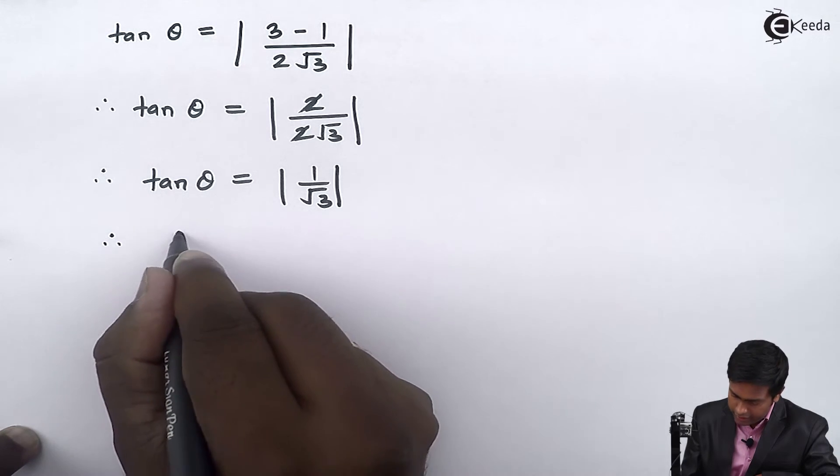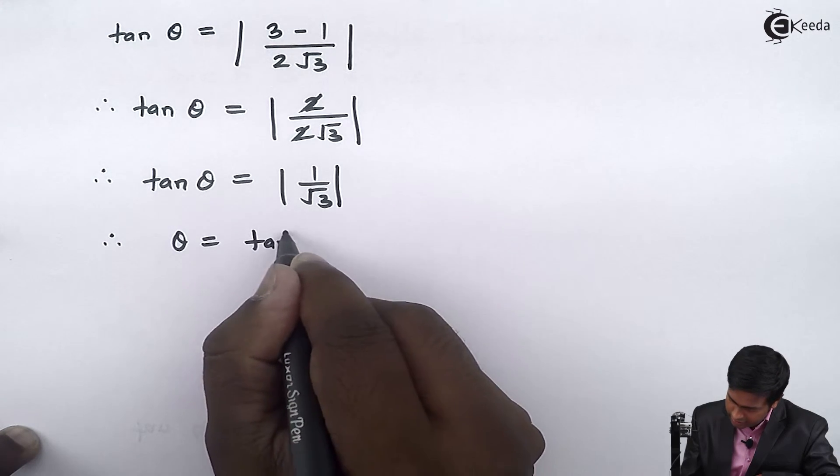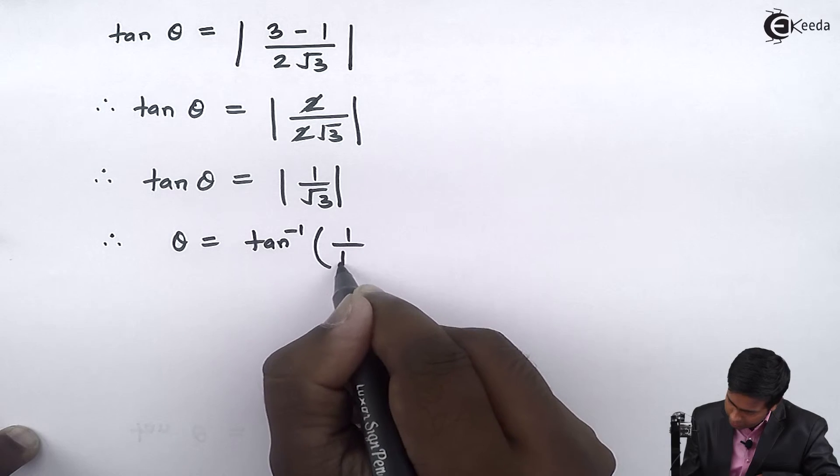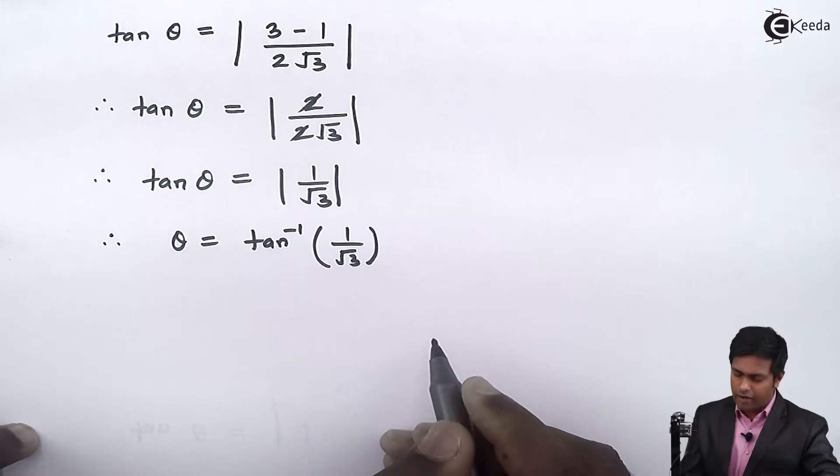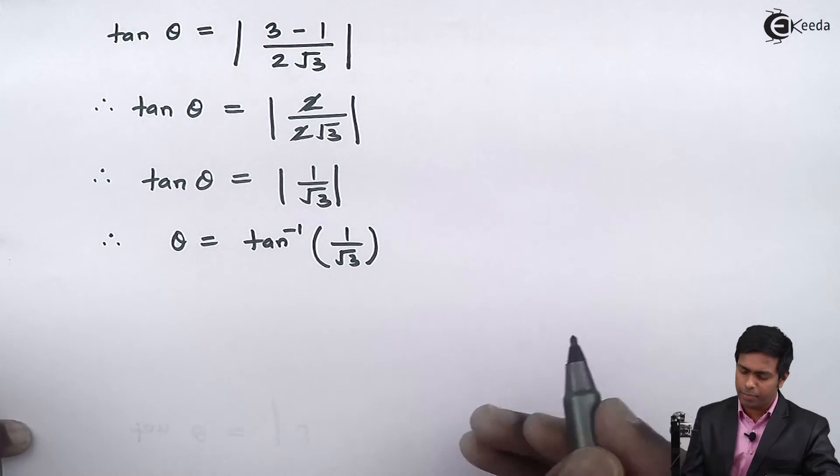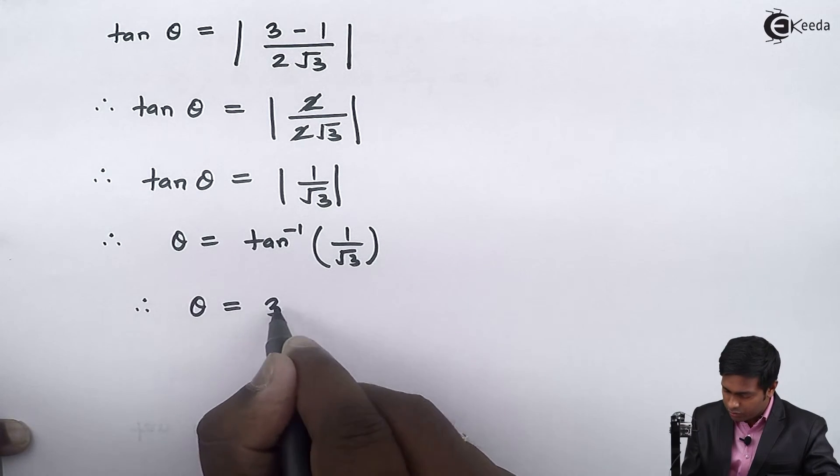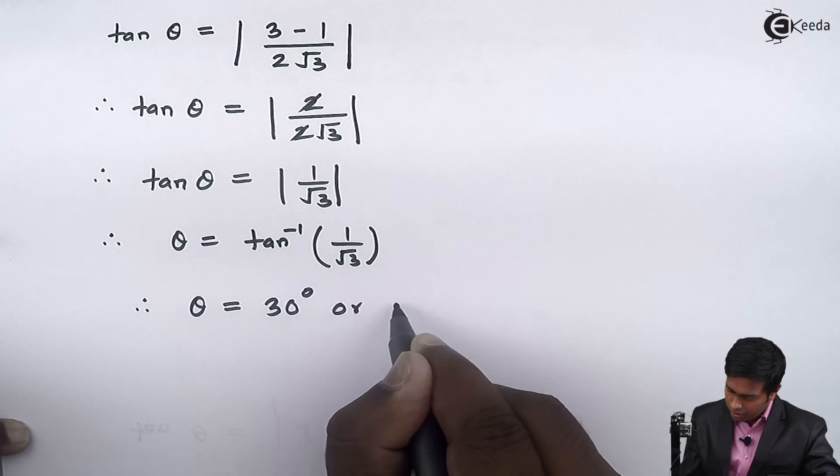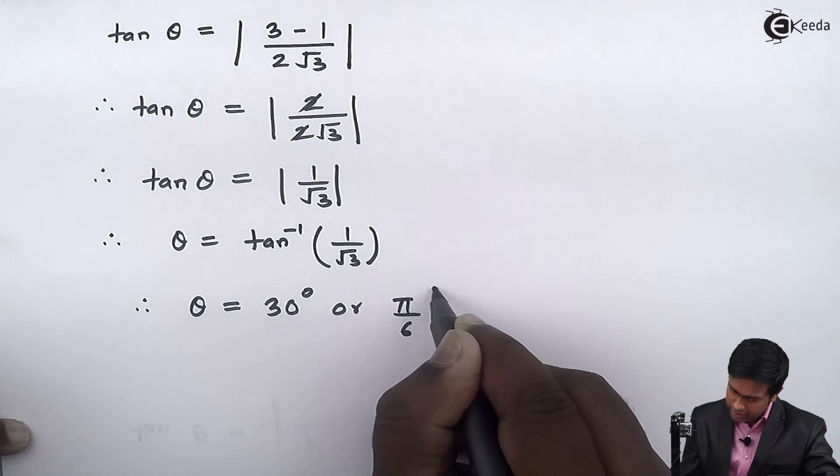To find θ, we get θ = tan⁻¹(1/√3). We know that tan⁻¹(1/√3) = 30° or π/6. Therefore, θ = 30° or π/6 radians.